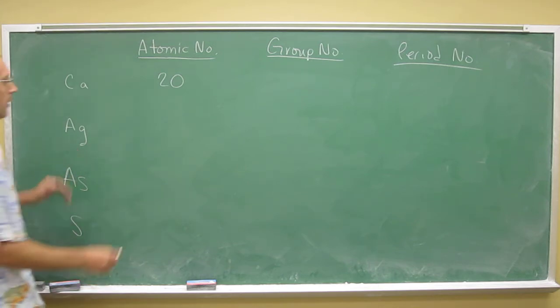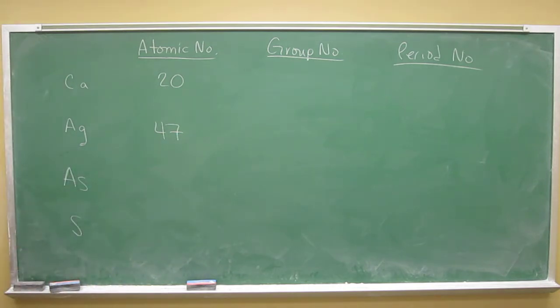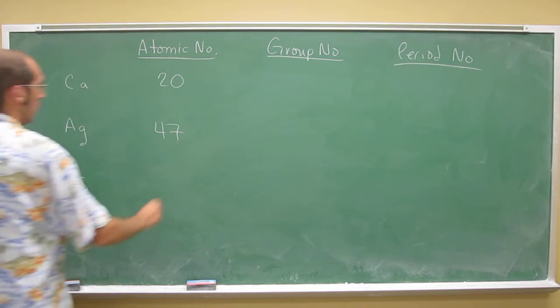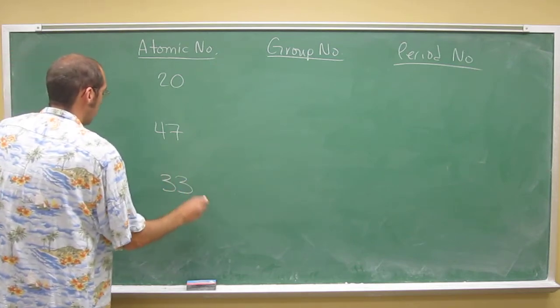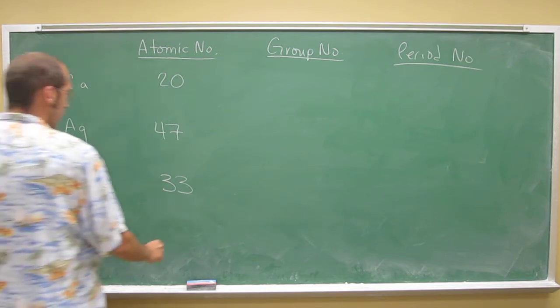Silver's atomic number is 47, arsenic is 33, and then sulfur is 16.